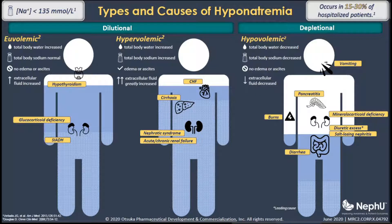First is isotonic or normal osmolar hyponatremia, where we have a normal plasma osmolality somewhere between 280 and 295 milliosmoles per kilo. This can be caused by hyperglycemia, or could be a pseudohyponatremia caused by hyperlipidemia or hyperproteinemia.